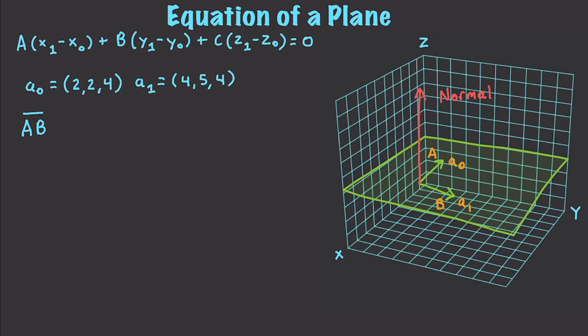So let's say that A naught in this situation is going to be at the point of 2, 2, 4 and A1 is going to be at the point of 4, 5, 4. Well, then AB, this vector, is going to be equal to BX minus AX and BY minus AY and BZ minus AZ. And if we go and perform that calculation, we find out that its points is going to be at 2, 3, and 0.